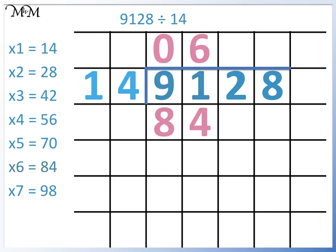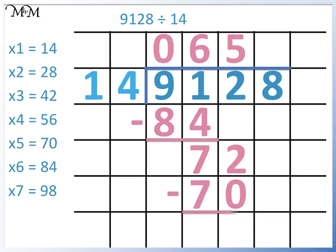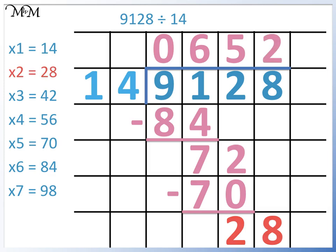91 divided by 14 equals 6. We subtract 84 from 91 to find the remainder — the difference is 7. We bring down the 2. We can see that 70 is the closest to 72 without going over, so 72 divided by 14 equals 5. We subtract 70 from 72 to find the remainder — the remainder is 2. We bring down the 8. 28 is in the 14 times table; 28 divided by 14 equals 2. So 9,128 divided by 14 is 652.